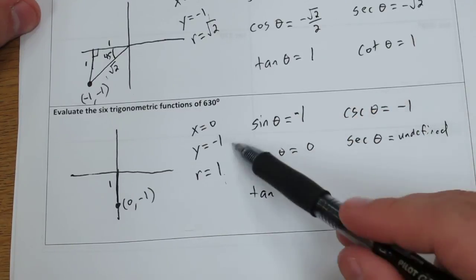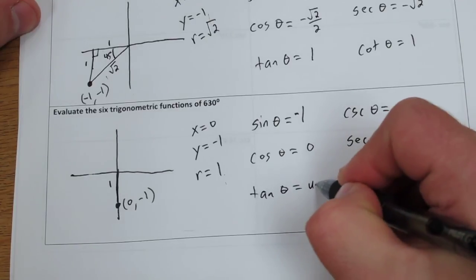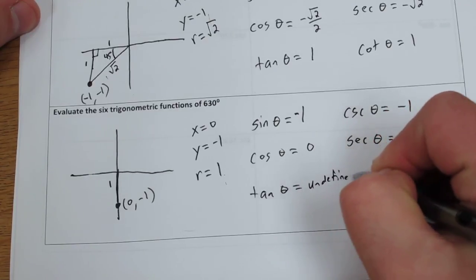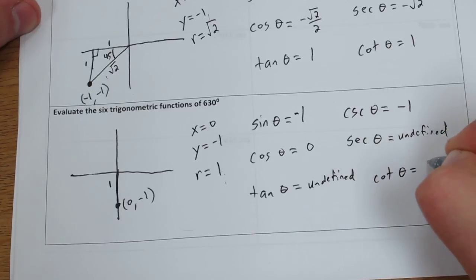Tangent theta is negative 1 over 0, so it's undefined. And cotangent theta is 0.